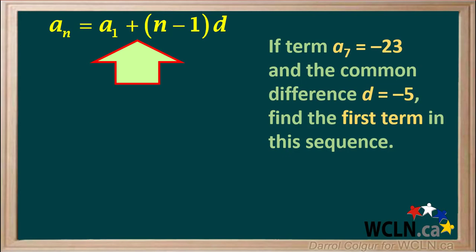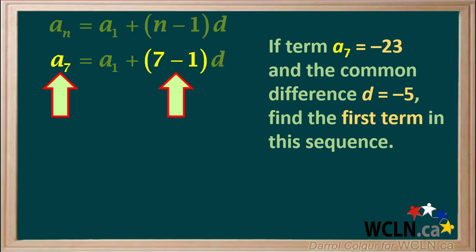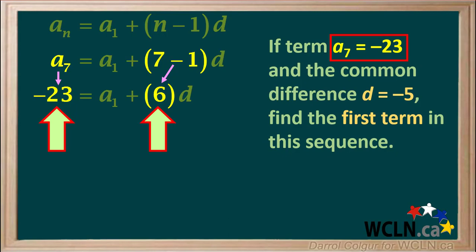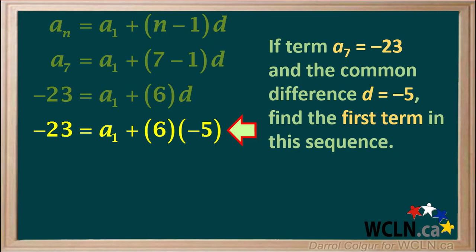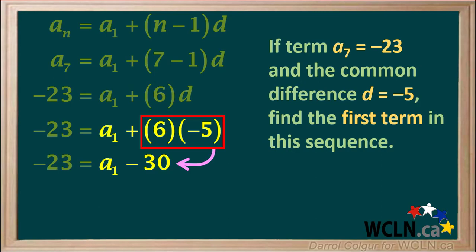We'll start by writing the general equation for an arithmetic sequence: an equals a1 plus n minus 1 times d. Because we're given the value for term a7, we replace an with a7 and n minus 1 with 7 minus 1. Term a7 equals negative 23 and 7 minus 1 equals 6. The common difference d equals negative 5. So we have the equation negative 23 equals a1 plus 6 times negative 5. 6 times negative 5 equals negative 30, so a1 plus 6 times negative 5 becomes a1 minus 30. Our equation is now negative 23 equals a1 minus 30.